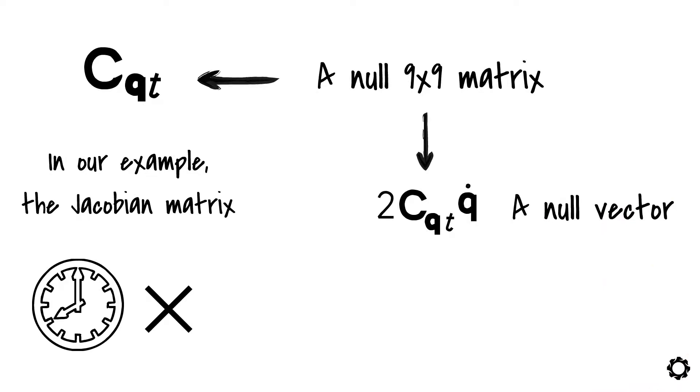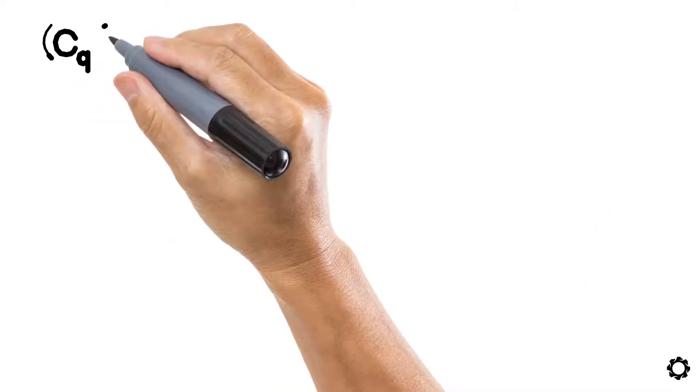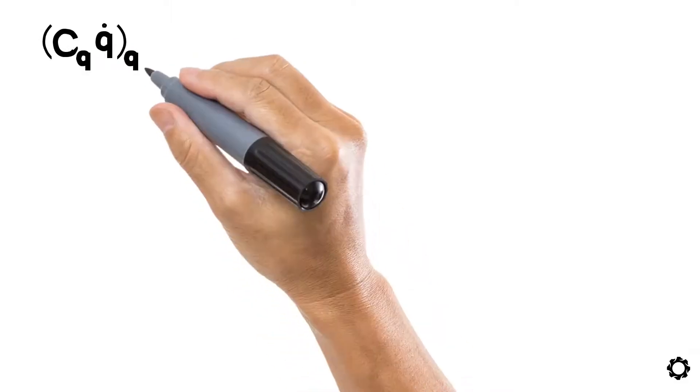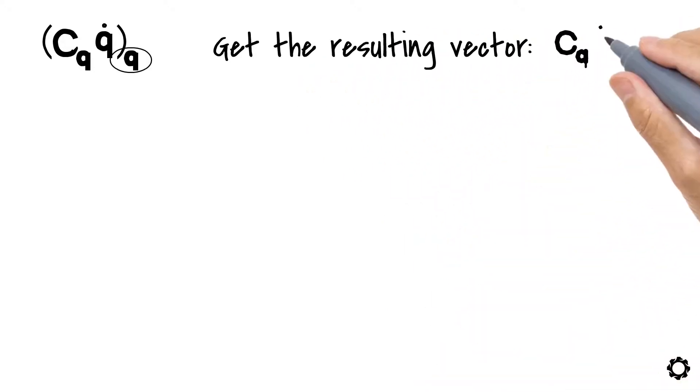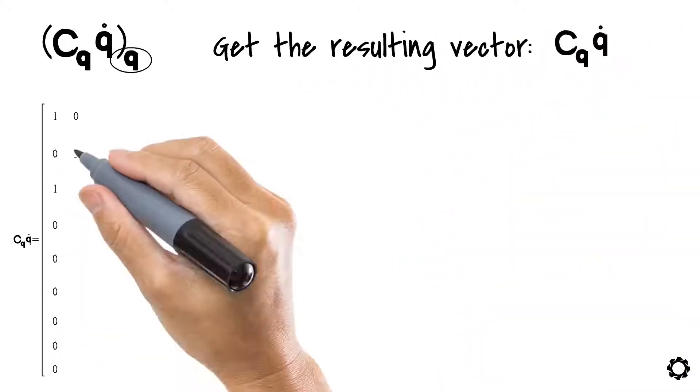Our final term is the product cq times q dot differentiated with respect to the generalized coordinates. The first thing we need to do is to get the resulting vector from the product cq times q dot. Let's do it.